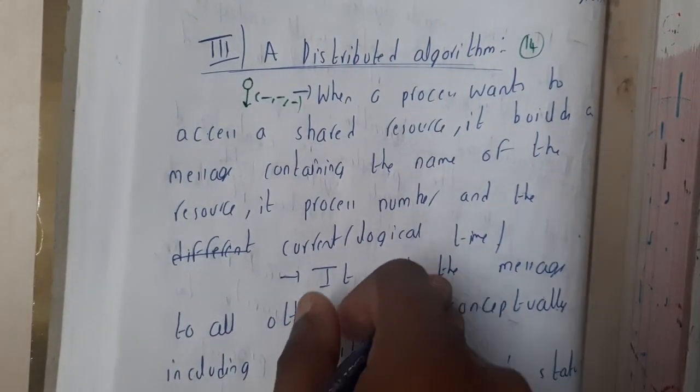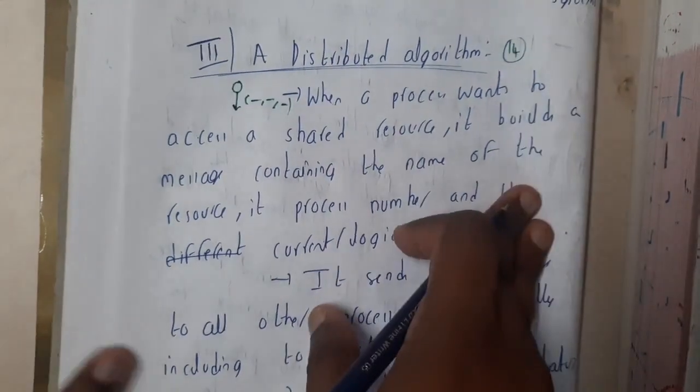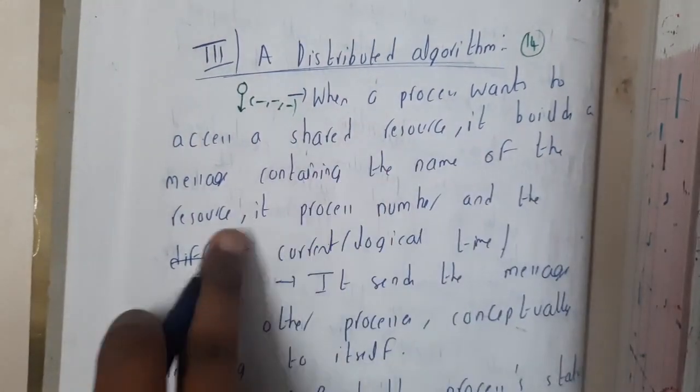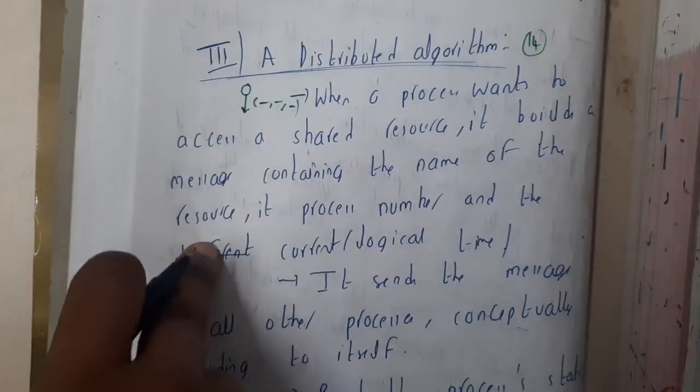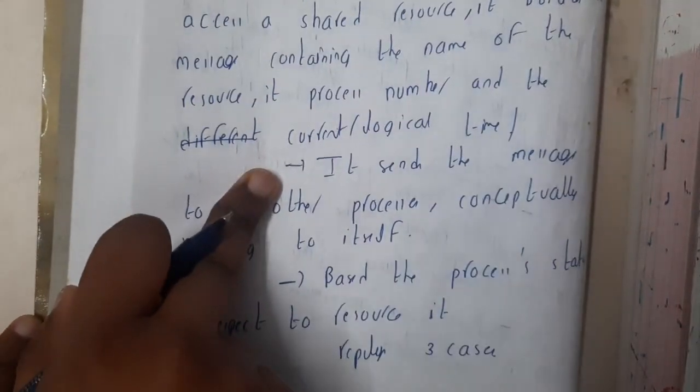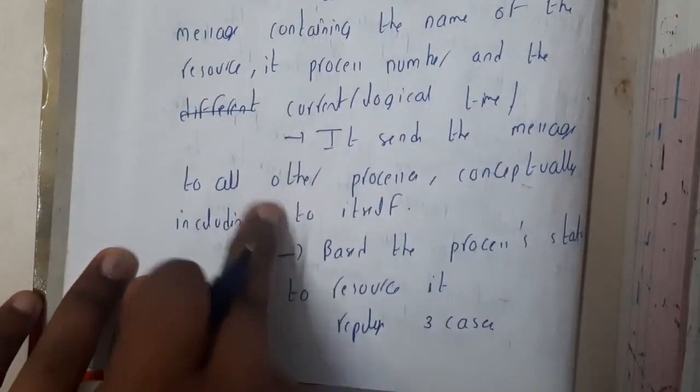When a process wants to access a shared resource, it builds a message containing the name of the resource, its process number, and the current logical time. It sends the message to all others, conceptually to itself also, but there will be no issue.